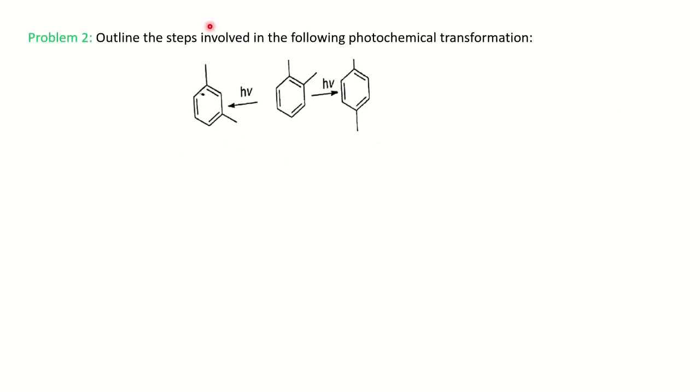The other is they may ask you outline the steps involving the following photochemical conversion. So here they are converting the ortho-xylene into meta-xylene and its isomer para-xylene. We will see how these are converting into one another. These are again isomers.